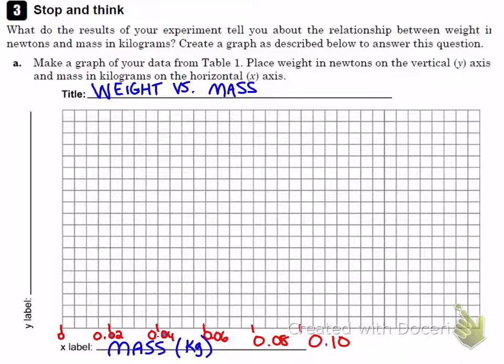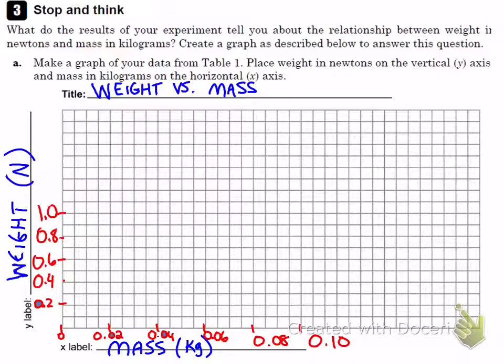I'm going to move on now to the y-axis. The y-axis is the weight which you measured in newtons, and the scale for that is going to look like this. Most of your measurements were decimals of a newton. And so what we're going to do is each line is worth .1 newtons. So 0, .1, .2, .3, .4, .5, .6, and so on.